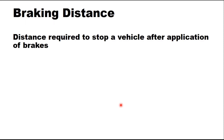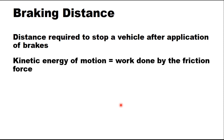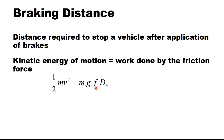Braking distance is the distance required to stop a vehicle after application of brakes. This distance can be calculated by setting the kinetic energy of motion equal to the work done by the friction force. If m is the mass of the vehicle moving at speed v, then half mv² is the kinetic energy of motion, and m×g is the weight of the vehicle.